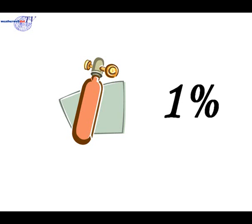Water vapour makes up about 0.4% of the atmosphere's total gases. Most of the water vapour is concentrated near the Earth's surface, and it makes up between 1 and 4% of that particular part of the Earth's atmosphere.